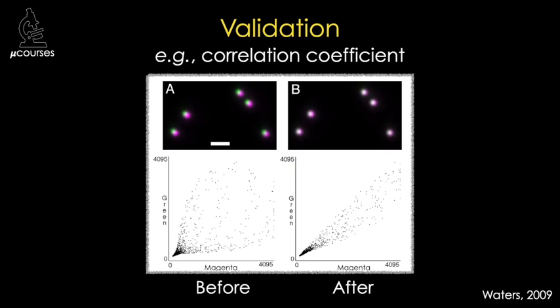It's also good practice to repeat the measurements on different days to make sure it's consistent over time. To validate, you can measure the change in co-localization in your test specimen before and after the correction is applied — I've done this here using a correlation coefficient. You can see that in this example, co-localization between green and magenta intensity values improved after the shift correction was applied.